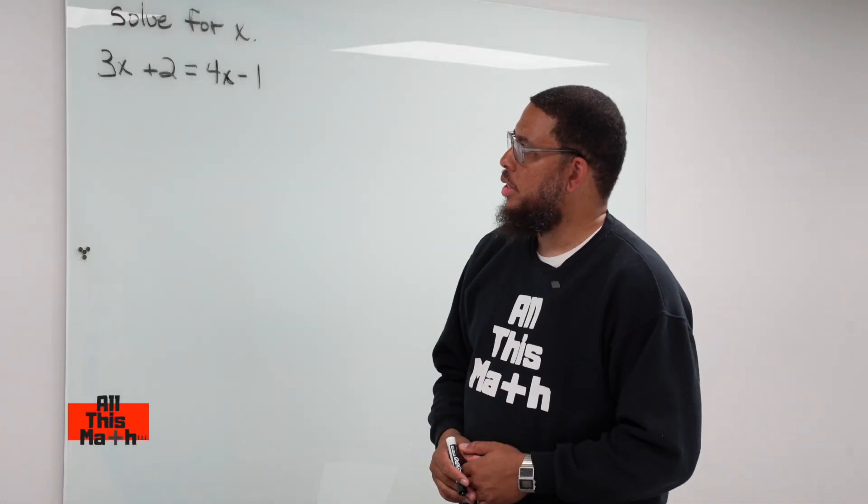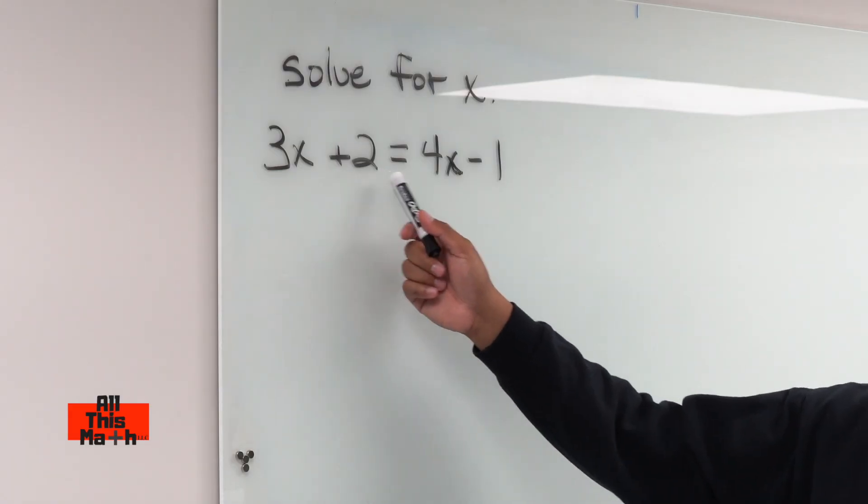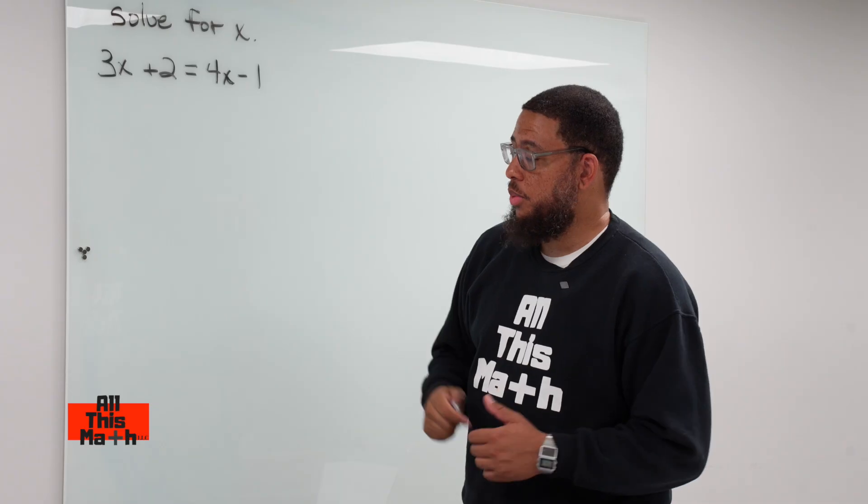Welcome back to All This Math, this is Professor Parker, and now we're doing a little bit of algebra. We have an equation up here, we're going to solve for x. Our equation is 3x plus 2 is equal to 4x minus 1, and we want to solve for x.